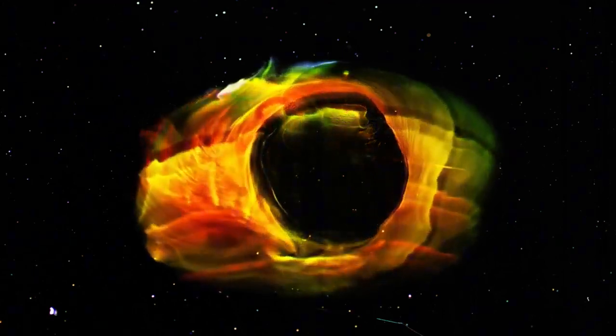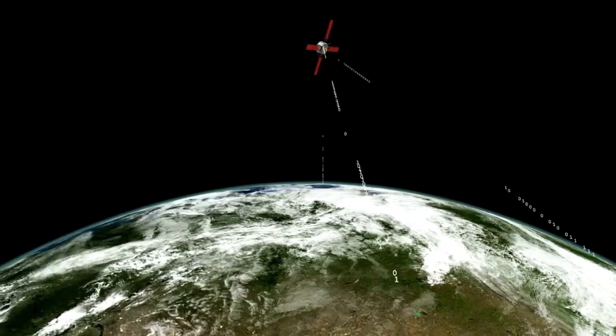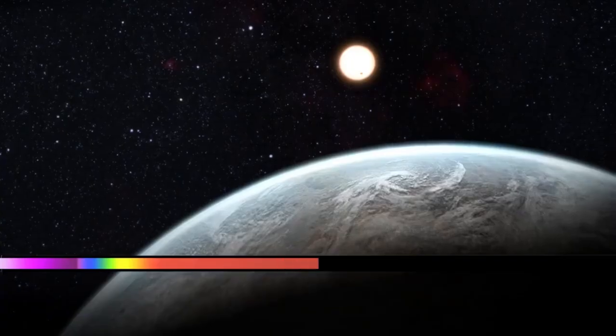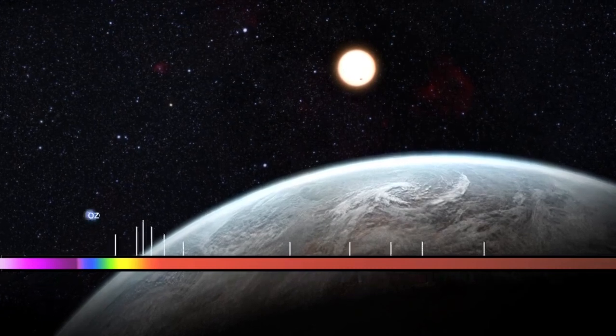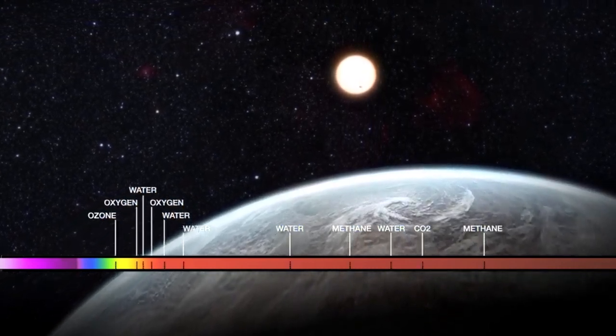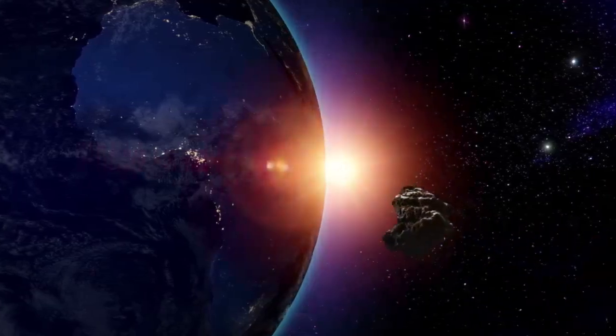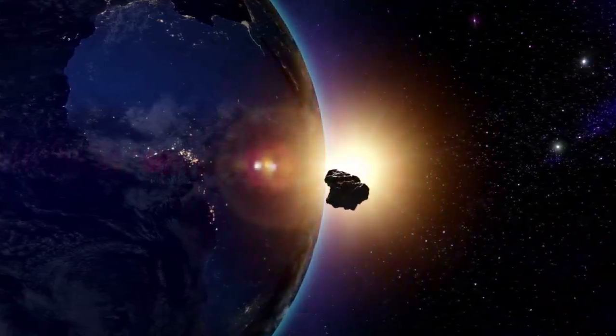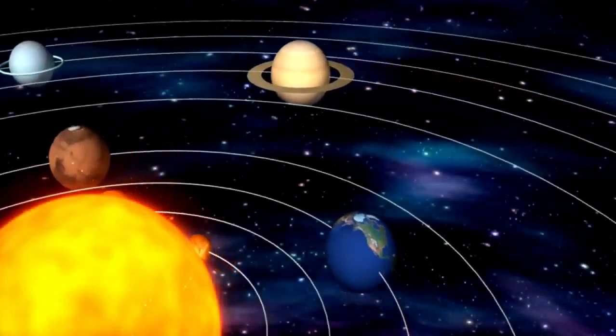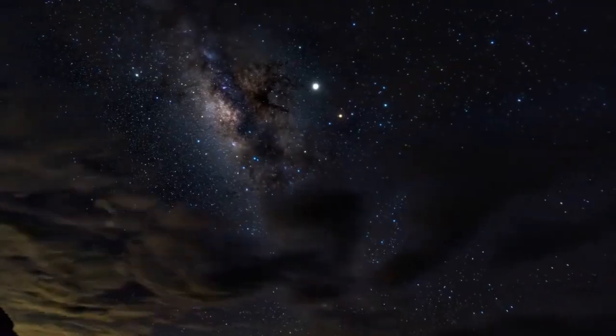Considering the vast distance, when we observe Betelgeuse, we're essentially looking back in time due to the finite speed of light. Despite light's incredible speed of about 300 million meters per second, it takes a considerable amount of time to travel through space. In Betelgeuse's case, the light reaching us today started its journey over six centuries ago. This makes a fascinating puzzle because the things we see happening in the night sky actually happened many centuries ago.